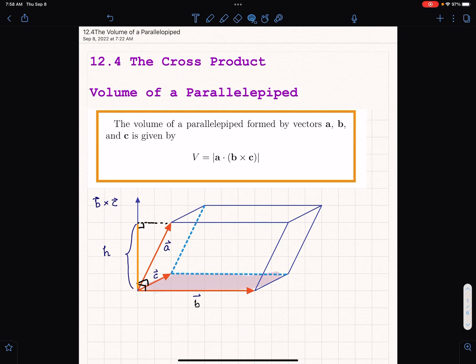Hello, everyone. We are going to talk about the volume of a parallelepiped. And what the heck is a parallelepiped? Well, it's a three-dimensional parallelogram, and we see this three-dimensional parallelogram, called a parallelepiped, is formed by the vectors a, b, and c.